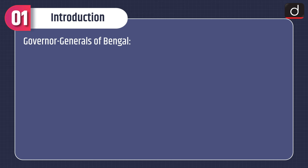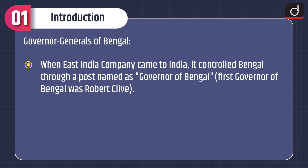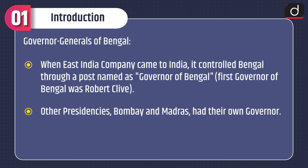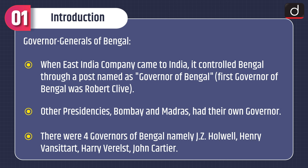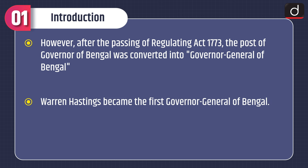Moving on to the introduction: when the East India Company came to India, it controlled Bengal through a post named Governor of Bengal. The first Governor of Bengal was Robert Clive. Other presidencies, Bombay and Madras, had their own governors. There were four governors of Bengal: J.Z. Hallwell, Henry Vansittart, Harry Verelst, and John Cartier. After the passing of the Regulating Act 1773, the post of Governor of Bengal was converted into Governor General of Bengal. Warren Hastings became the first Governor General of Bengal.